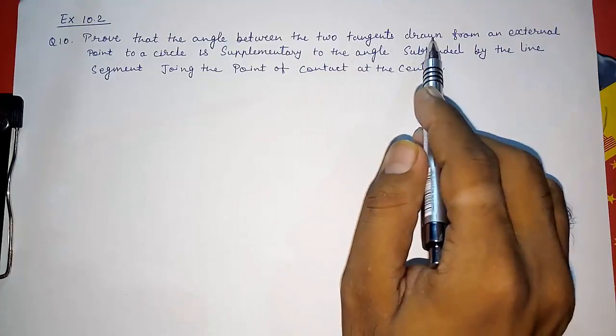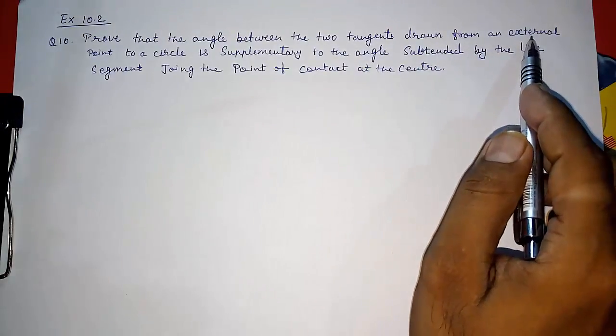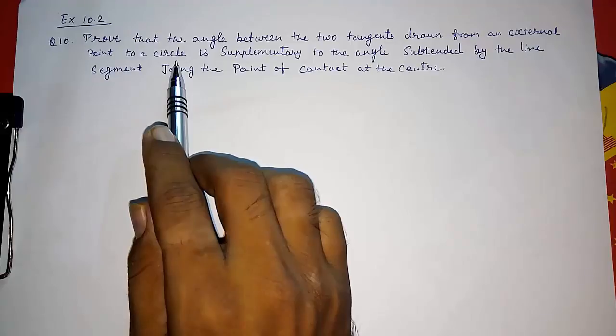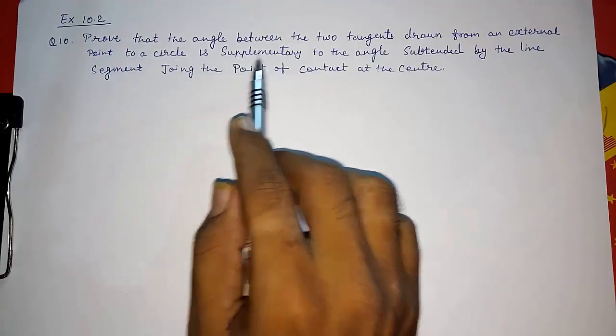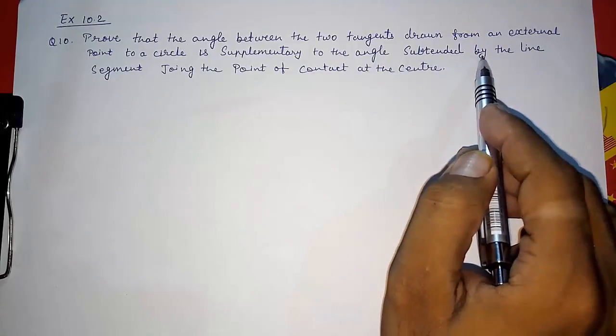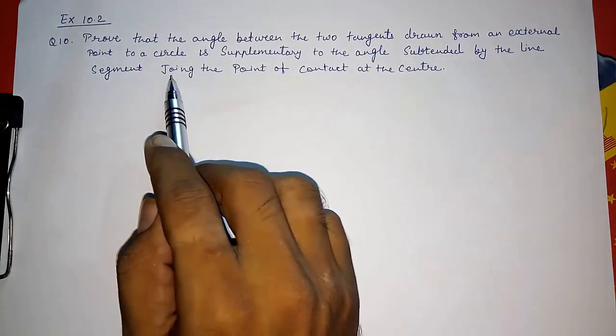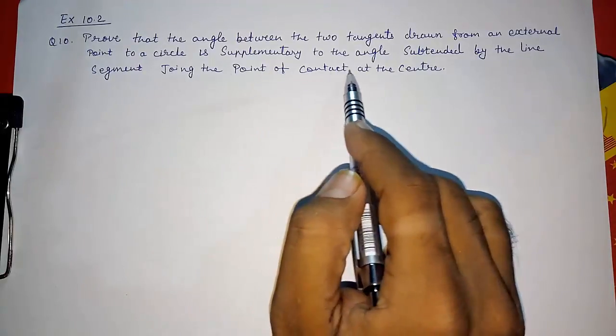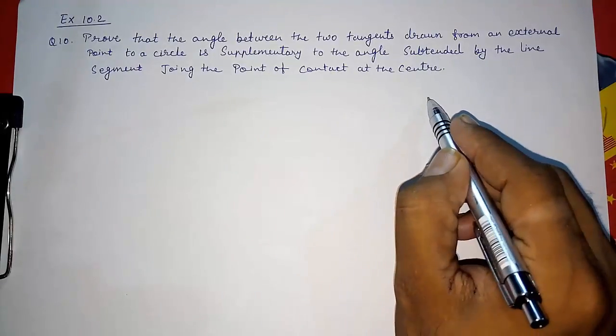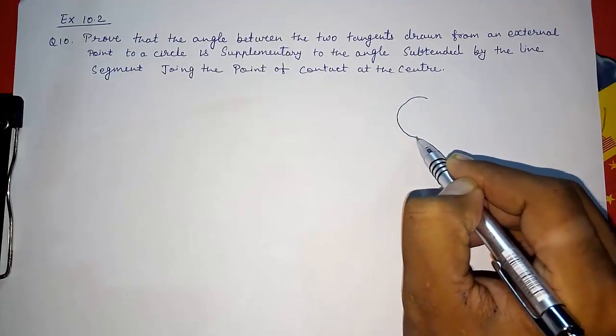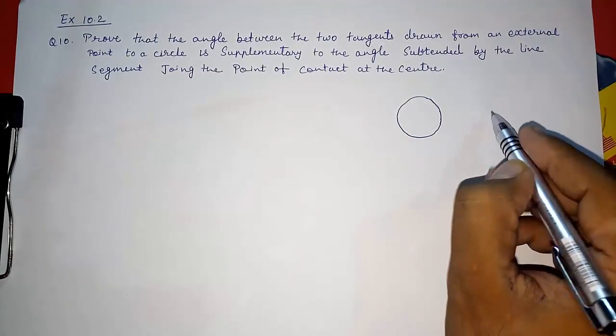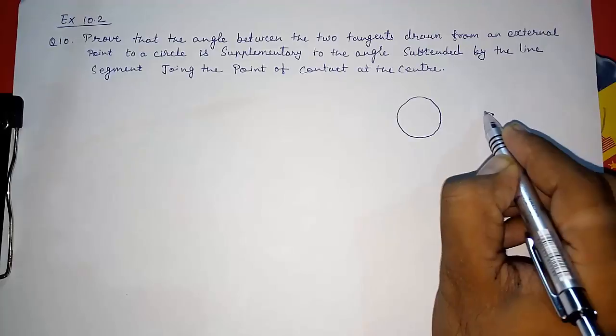This means if you draw from an external point two tangents, here, and give this the name point P, the tangents PA and PB with center point O...